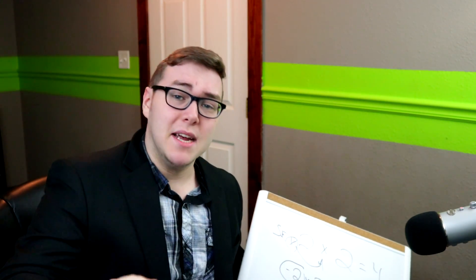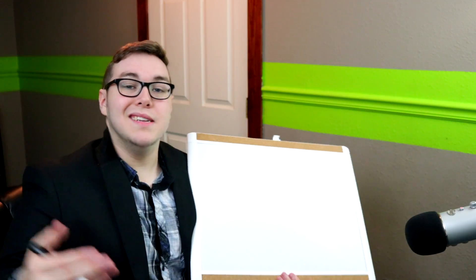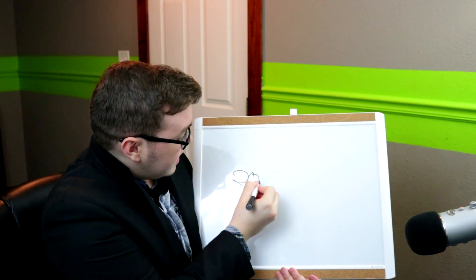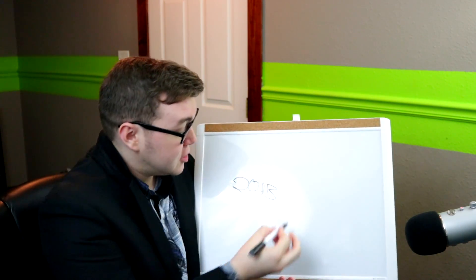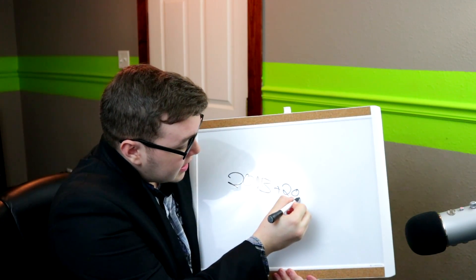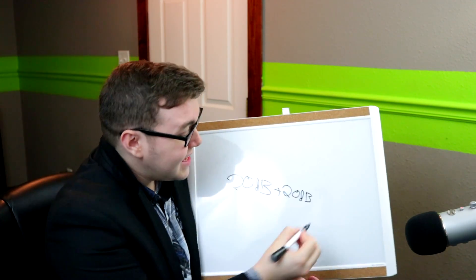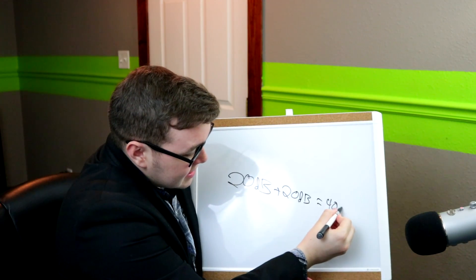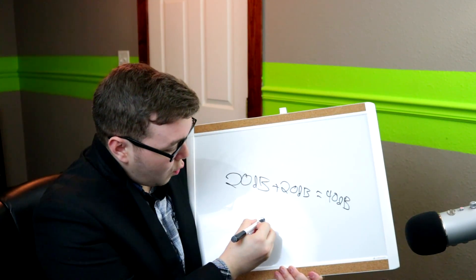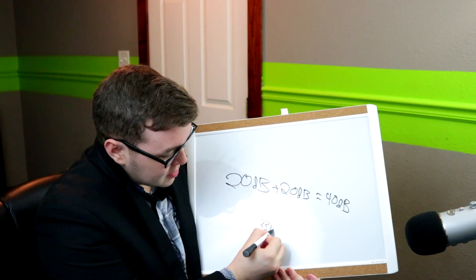Loudness is measured in decibels. But decibels — those units of measure don't obey the same rules as traditional math. They are logarithmic. Meaning, if you have a speaker playing at 20 decibels and you add another speaker playing at 20 decibels, you don't get 40 decibels. In fact, what you get is 23 decibels, because sound is logarithmic in its units of measure. Just like sex.